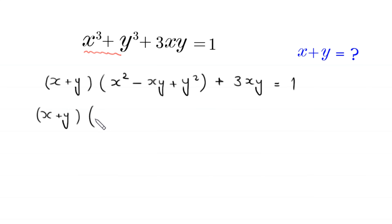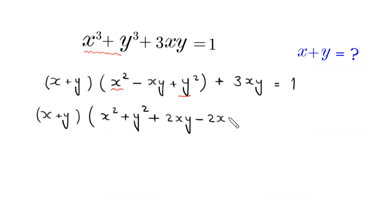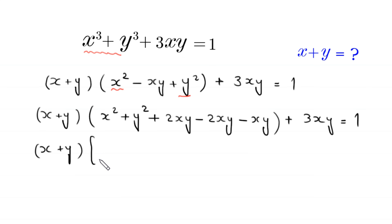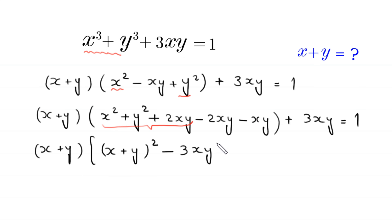Next, x plus y times — we combine the terms x squared and y squared. To make x squared plus y squared a perfect square, we add and subtract 2xy. So we get x plus y times x squared plus y squared plus 2xy minus 2xy minus xy plus c times xy equals 1. The expression x squared plus y squared plus 2xy becomes x plus y whole squared, and negative 2xy minus xy gives negative 3xy.